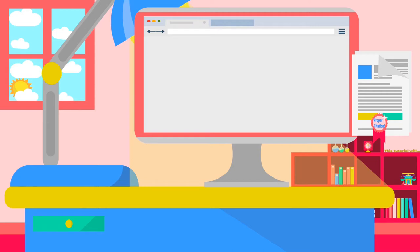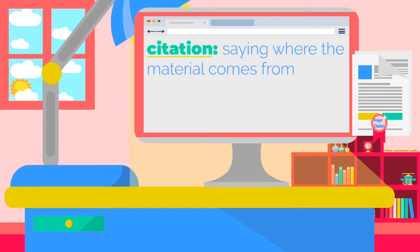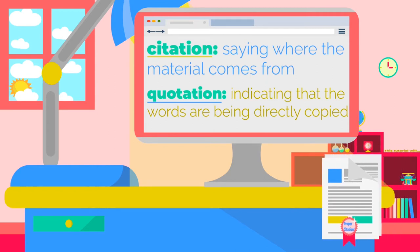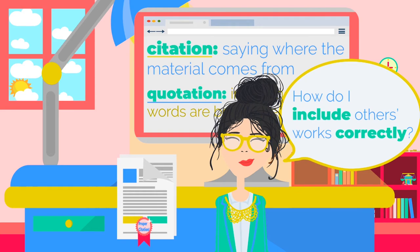Note that a citation means saying where material comes from, while quotation means indicating that words are being directly copied. You must include a citation when you use an outside source in your paper. If you use an idea from the source but rewritten in your own words, you must include a citation plus a textual signal indicating the idea came from an outside source. If you use the exact wording from an outside source, you must include a citation plus quotation marks around the exact wording.